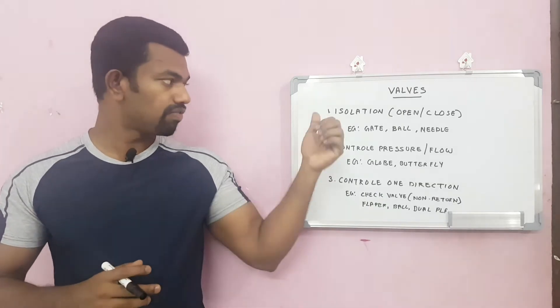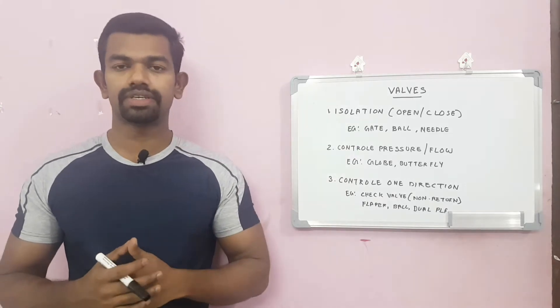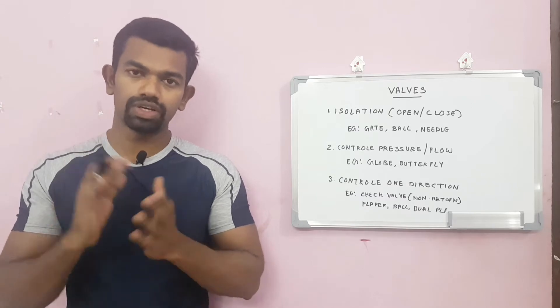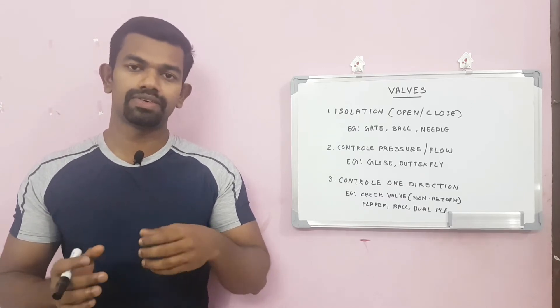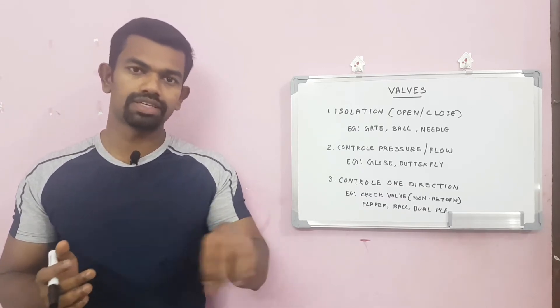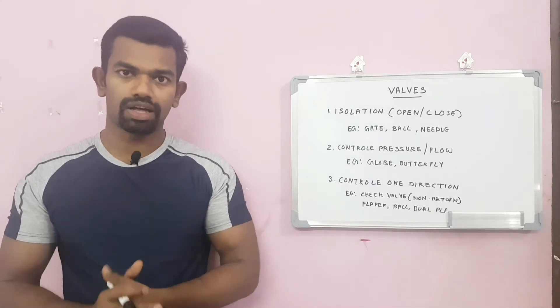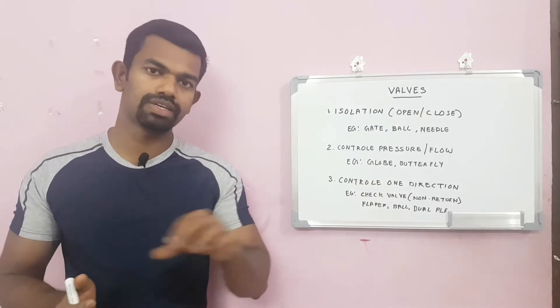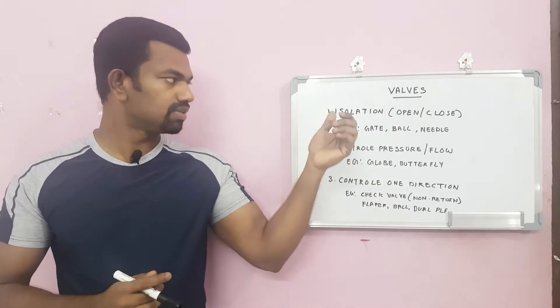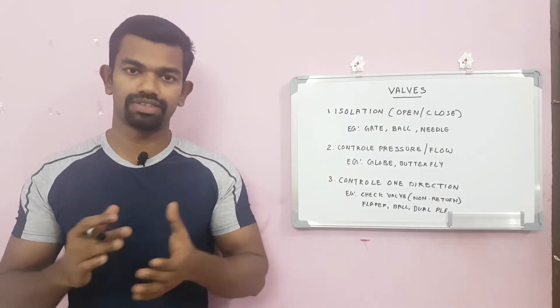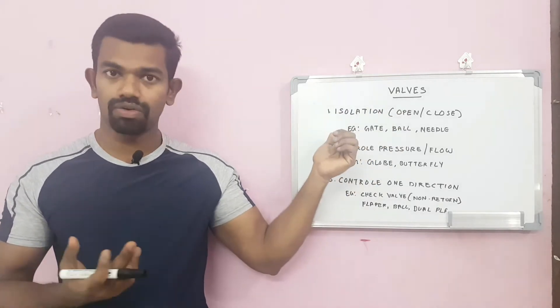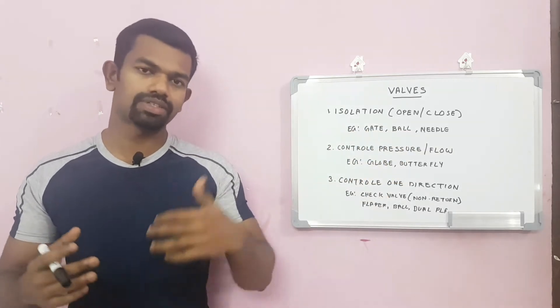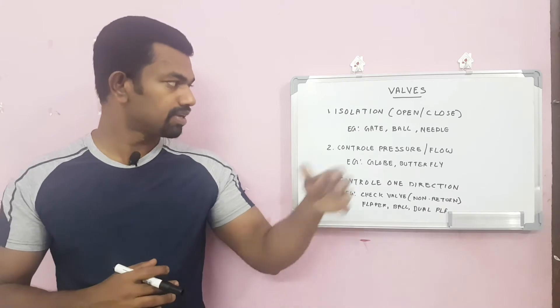First, isolation purpose. Isolation means the valve will be in two conditions: it will be fully open or fully closed. That means it will allow the fluid to pass through in full throat, otherwise it will be closed completely to not allow any flow. This is the purpose of isolation valves. Examples of these valves are gate valves, ball valves, needle valves, etc.